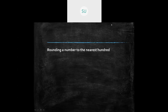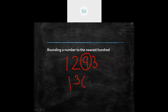To round off to the nearest hundred, look at the tens digit. For example, in the number 1,296: the hundreds digit is two and the tens digit is nine. Since nine is greater than five, add one to the hundreds digit — two becomes three — and all digits to the right become zero. The result is 1,300.